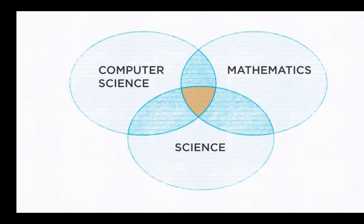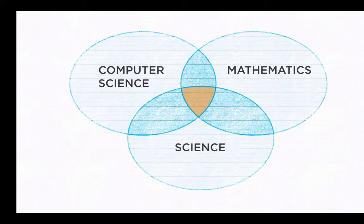Computational science can be seen as the third leg of science, in addition to theoretical and experimental science. It lies at the intersection of computer science, mathematics, and science. Computational science uses mathematics and computer science to model real-world problems and conduct simulation experiments.